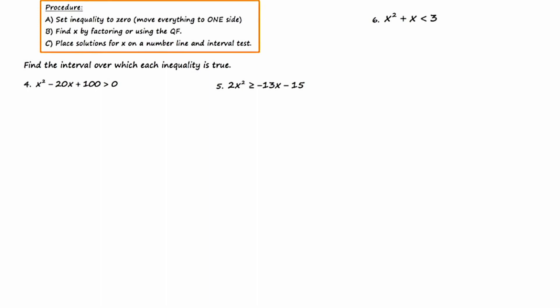Okay, so in example four, the inequality is already set to zero, so we're going to start by solving for x by factoring. And this is going to factor as (x - 10)² > 0.